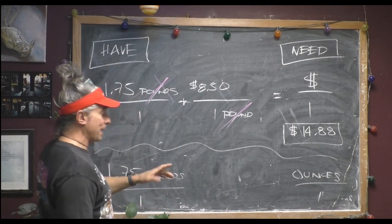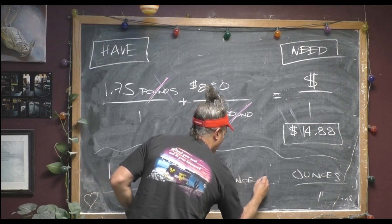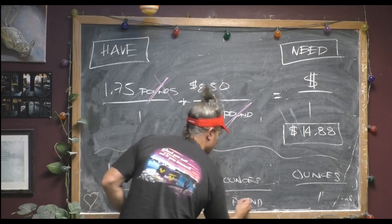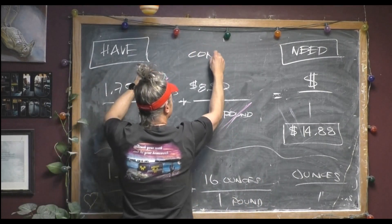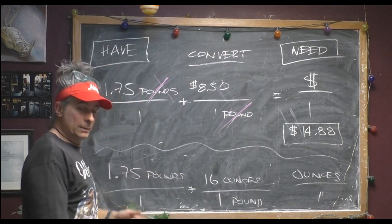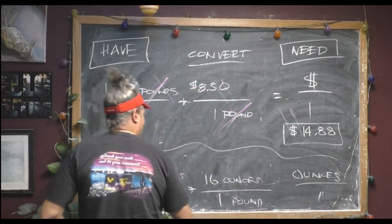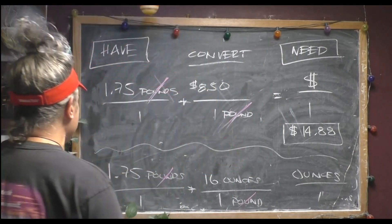I do want to write it as 16 ounces per one pound. So it's the same kind of conversion fraction here. Convert. It's the same kind of conversion fraction, except instead of dollars to pounds, it's ounces to pounds. So converting weight to money versus converting weight to a different kind of weight.